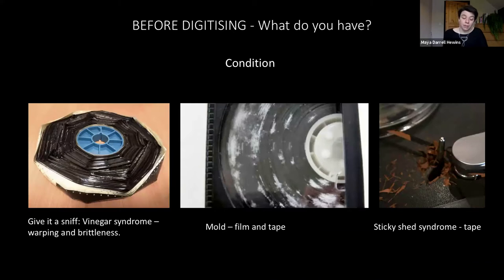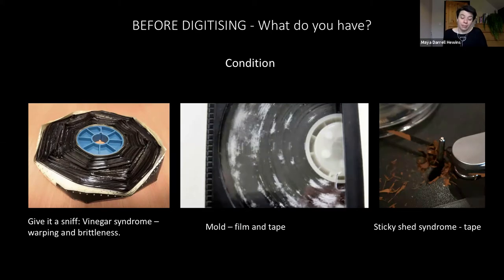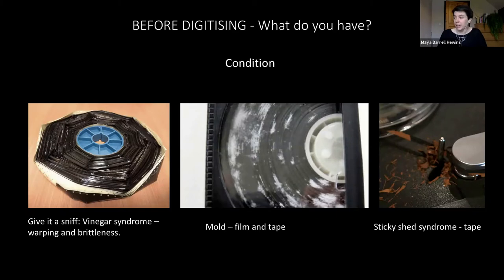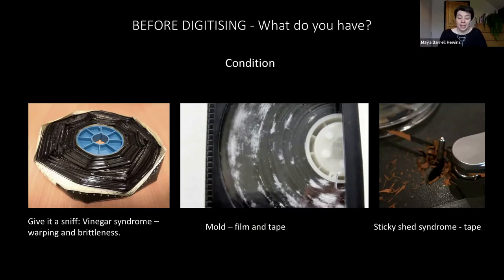You'll want to think about the condition of your material — a visual inspection can tell you a lot. Common things to look out for are mould on both tape and film. Vinegar syndrome, named after the smell, indicates acetate film is starting to deteriorate. Sticky shed syndrome affects tape — it's when the binder holding the magnetic element of the tape to the plastic starts to deteriorate. These can both be slowed but can't actually be stopped, so separate out this material from material that's still in good condition. The handout provides lots of guides on conservation and ways to deal with these issues.